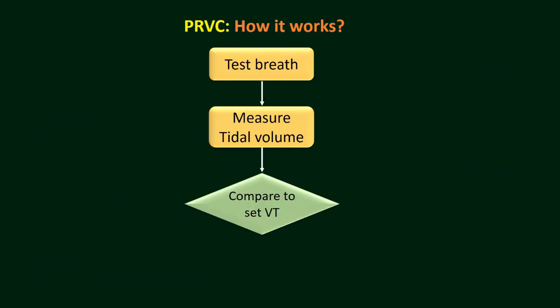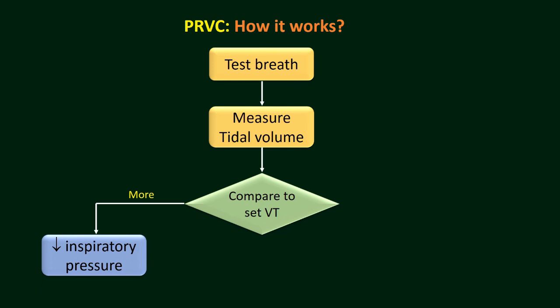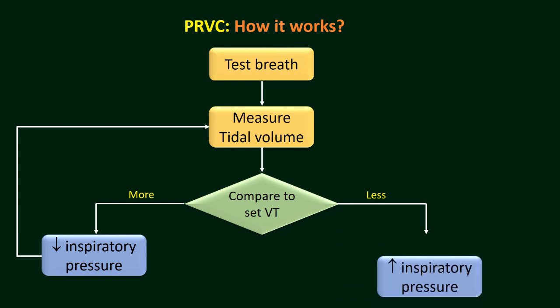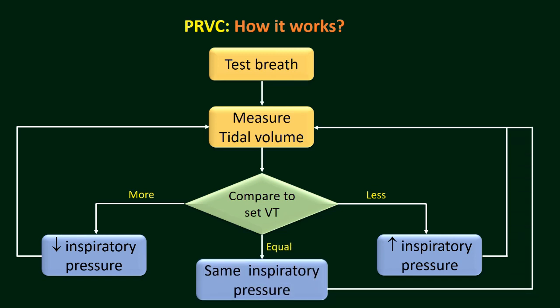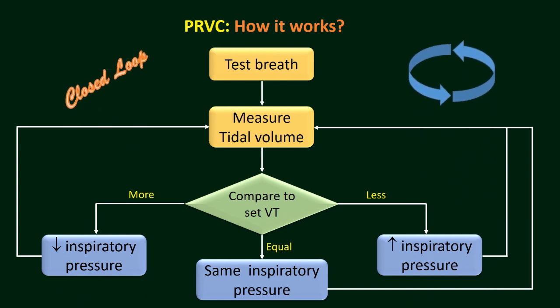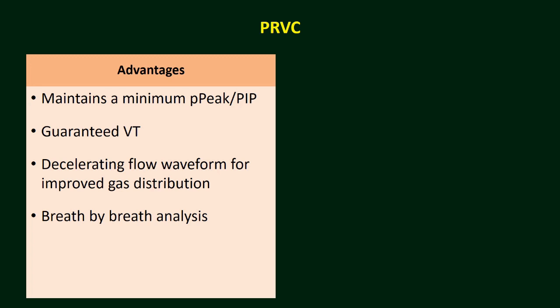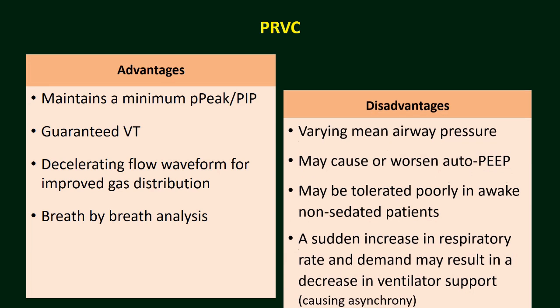The maximum allowed inspiratory pressure is 5 cmH₂O below the set upper pressure alarm limit. In summary: initially a test breath is delivered and the tidal volume is measured and compared with the set tidal volume. If it is more, inspiratory pressure decreases in the next breath; if it is low, pressure control increases; if it is the same, the same peak pressure is maintained — and this continues breath by breath, making it a closed loop ventilation. Advantages of PRVC include: maintaining minimum peak pressure, ensuring guaranteed tidal volume delivery, using a decelerating flow waveform for improved gas distribution, and breath-by-breath analysis.